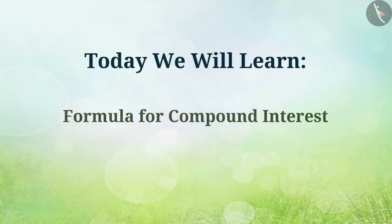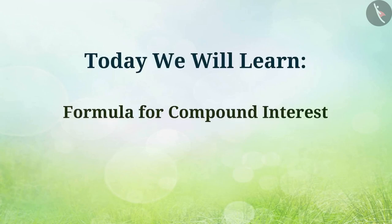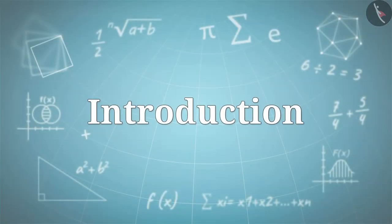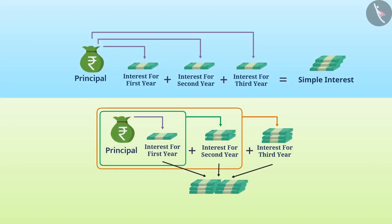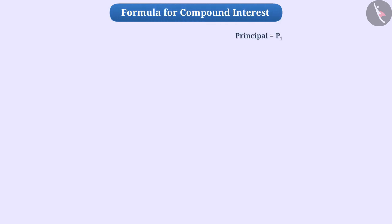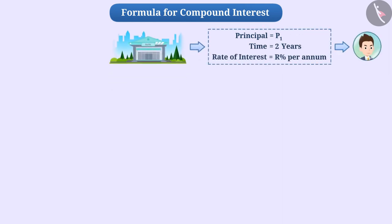Today, we will learn the formula for compound interest. In the previous video, we learnt about compound interest. Let us now find the formula for compound interest. Consider the principle P1 is borrowed for 2 years on R% rate of interest per annum. Let's find the compound interest on this.